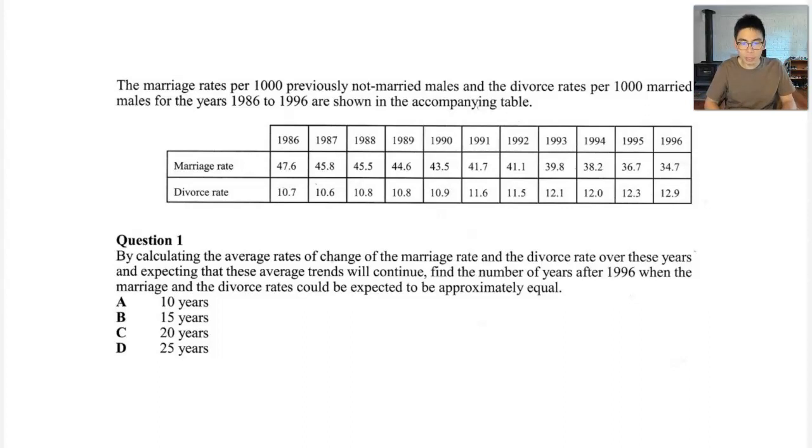By calculating the average rates of change of the marriage rate and the divorce rate over these years and expecting that these average trends will continue, find the number of years after 1996 when the marriage and the divorce rates could be expected to be approximately equal. And we can see in the answer options it's either 10, 15, 20 or 25 years later.